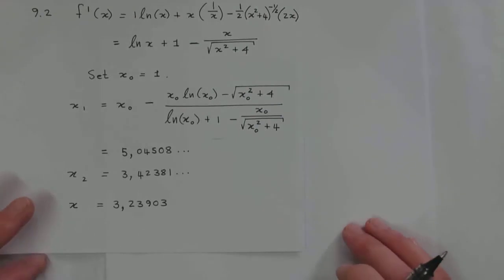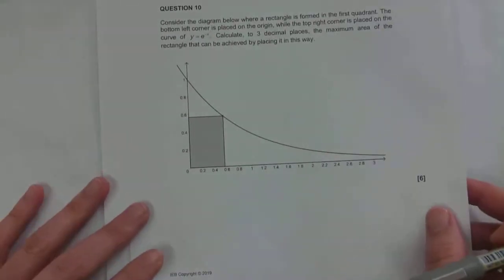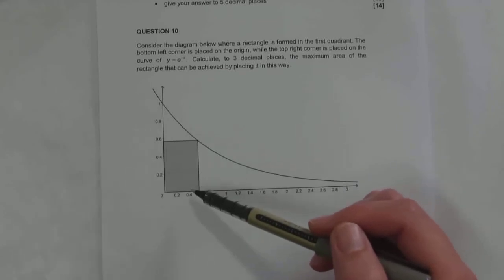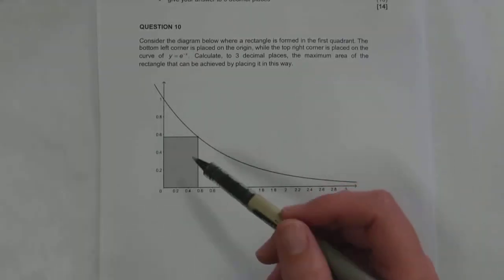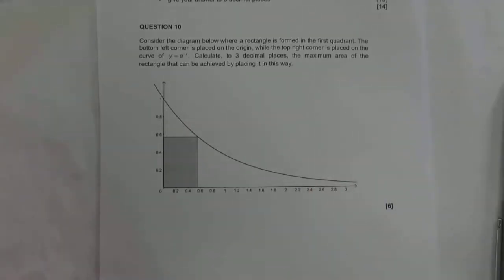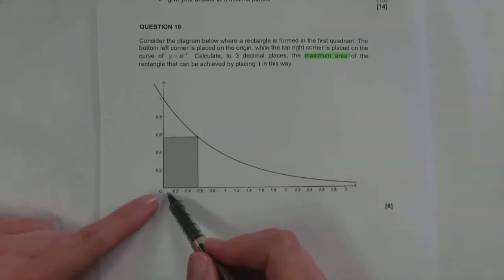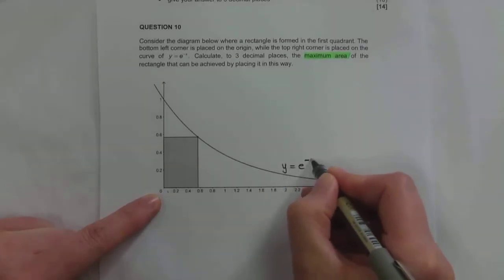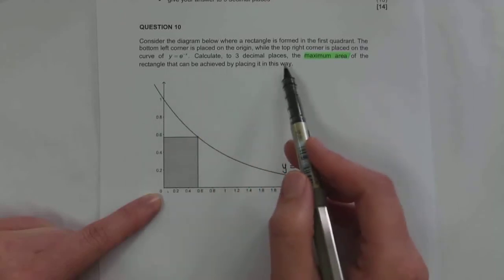That was using the Newton-Raphson method with the derivative of ln(x). The next question in this past paper, question 10, says: consider the diagram below where a rectangle is formed in the first quadrant. The bottom left corner is placed on the origin, while the top right corner is placed on the curve y = e^(−x). We need to calculate to three decimal places the maximum area of this rectangle.